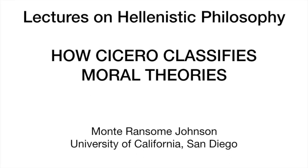That is Cicero's famous but contentious classification of theories of the highest good, to which we will eventually return. Keep it in mind, because one of his criticisms of Epicurus has to do with the fact that Epicurus essentially has an incoherent theory — it's not clear where it can be located on this clear breakdown.